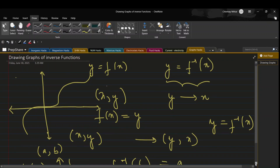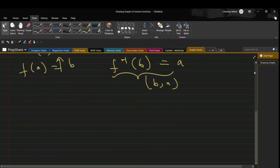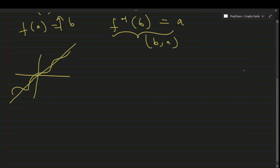Doing this reflection is not always possible. For example, if you have a complex graph and say 'take reflection about y = x,' it is not very easy to do. If you try to take the reflection by hand, it is very difficult to draw accurately what the graph will look like.